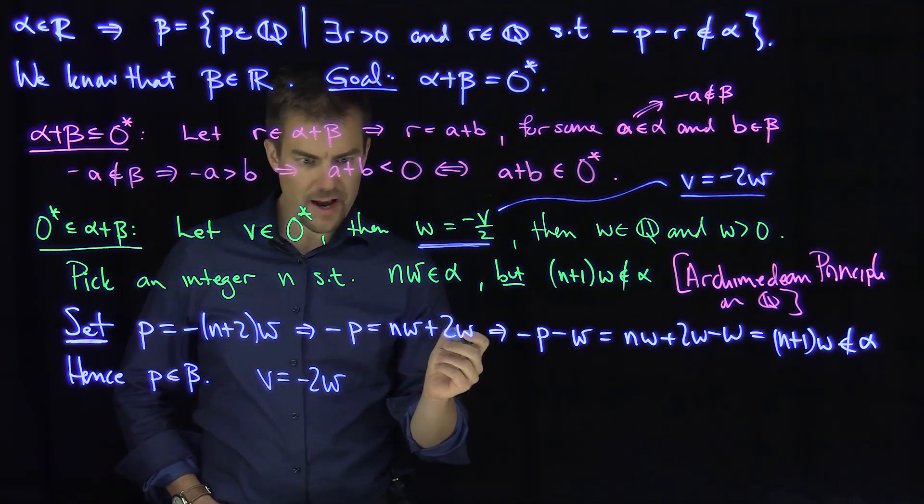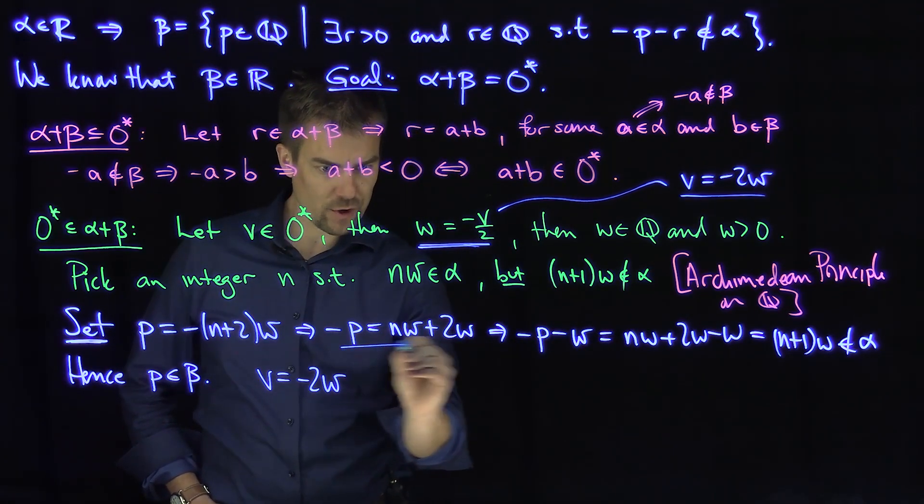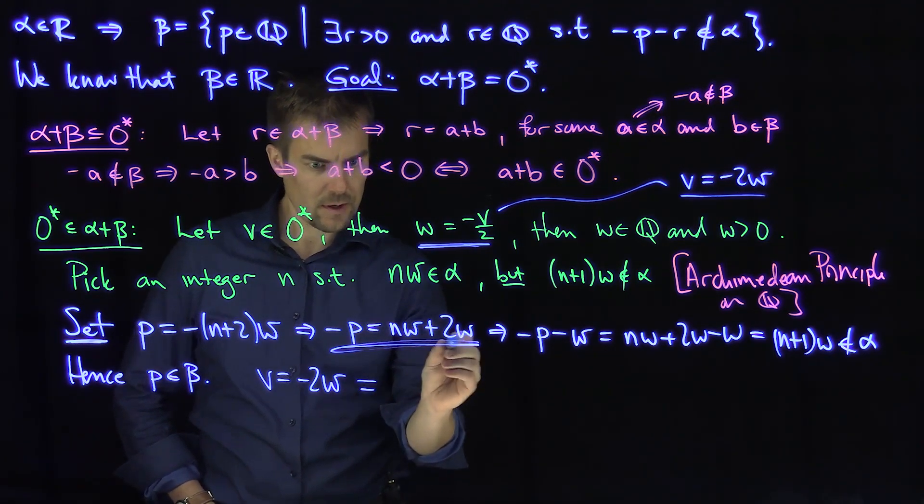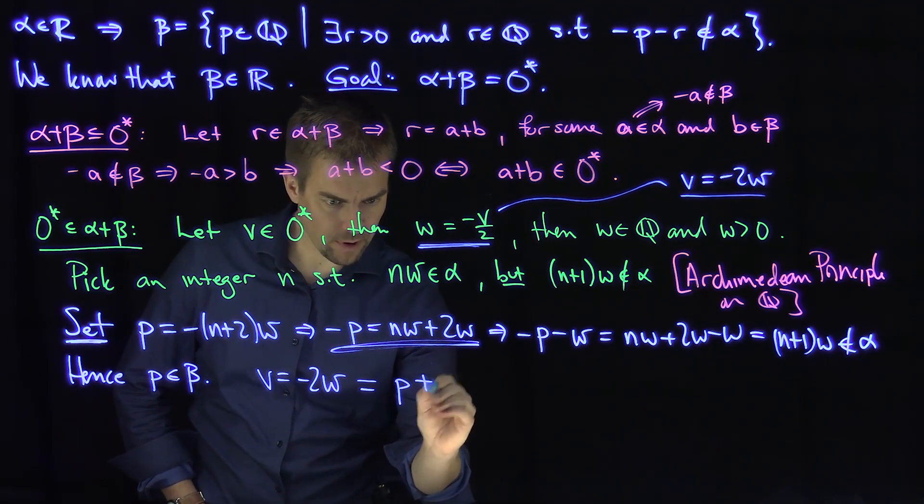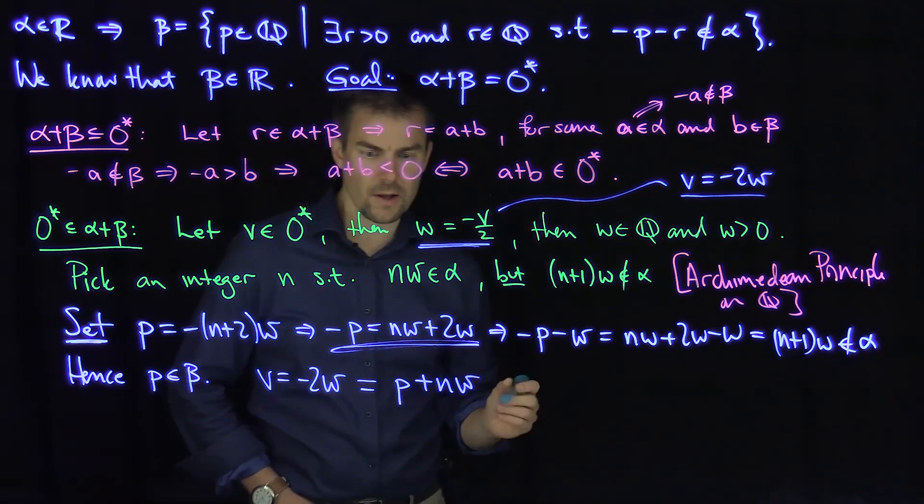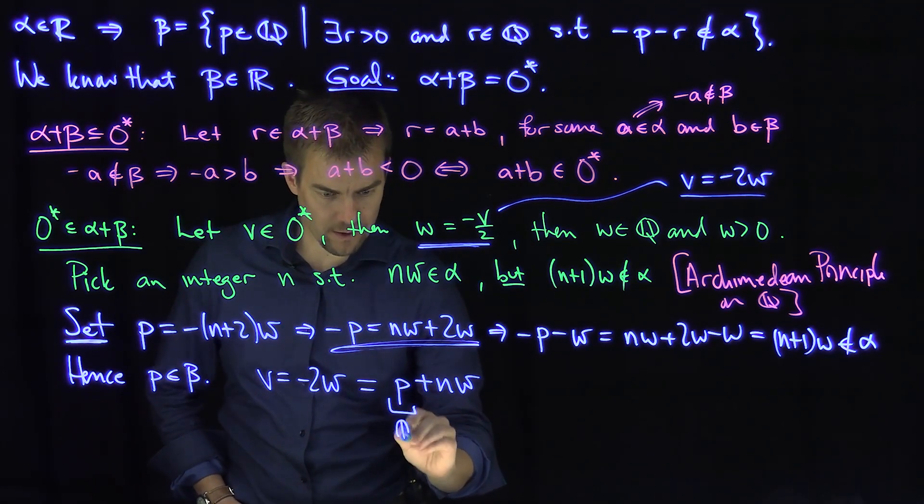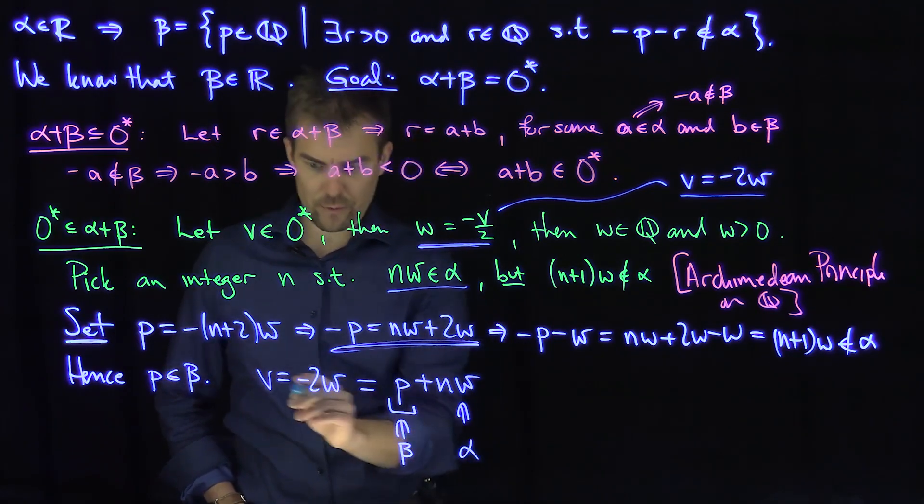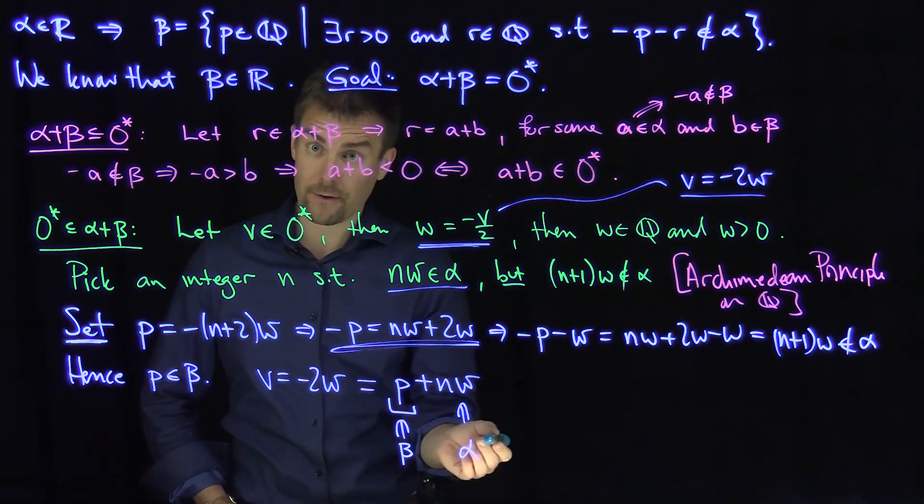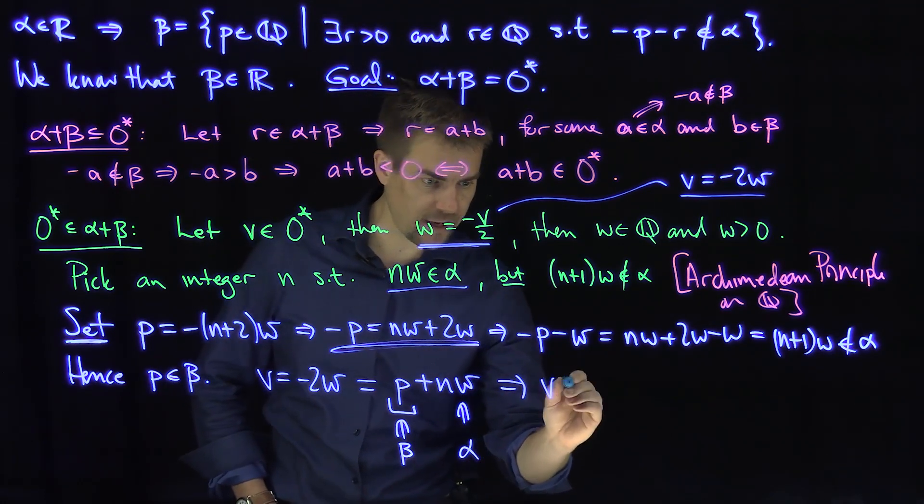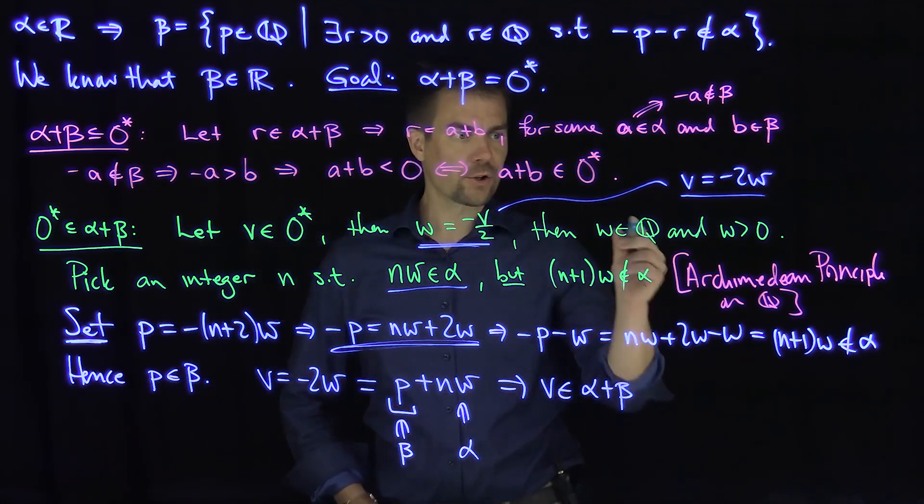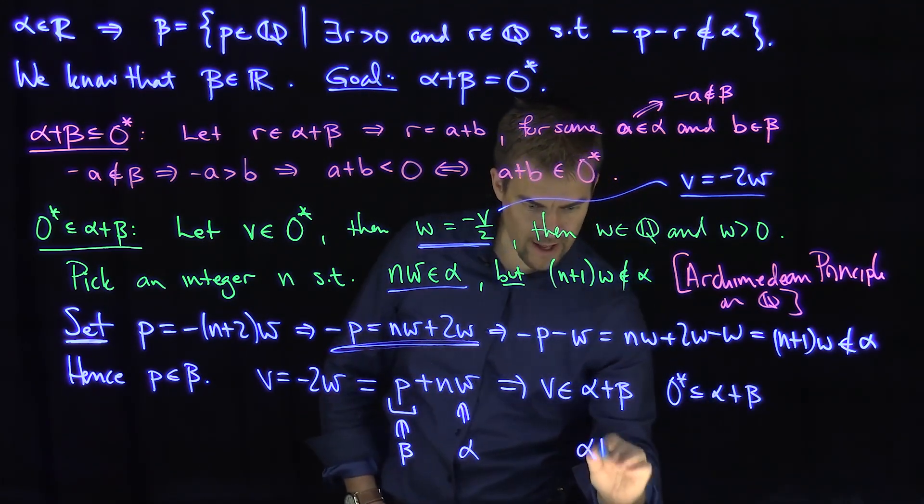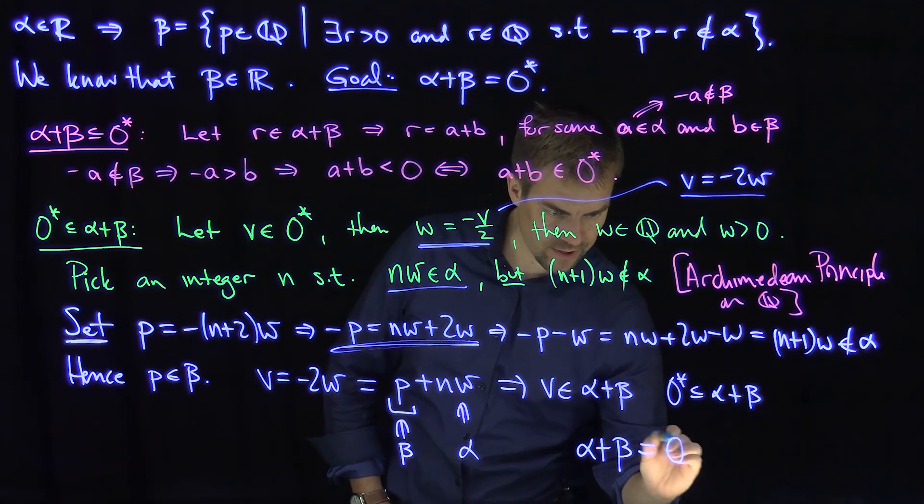But what is negative 2w? So negative 2w, we can look at this equation over here. If we solve for this, I'll put the negative 2w over here, which is going to be p plus n w. Now we know that p is in beta and n w by choice is in alpha. So we've just shown that v is in what? This implies that v is in alpha plus beta. And that shows the inclusion that 0 star is contained in alpha plus beta. Hence we have shown that alpha plus beta by these two inclusions is 0 star.